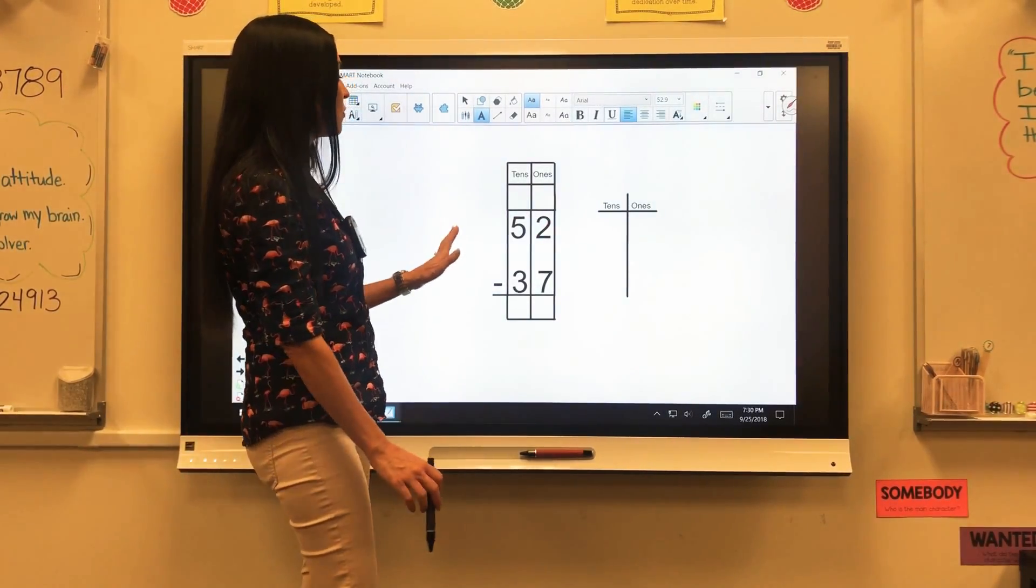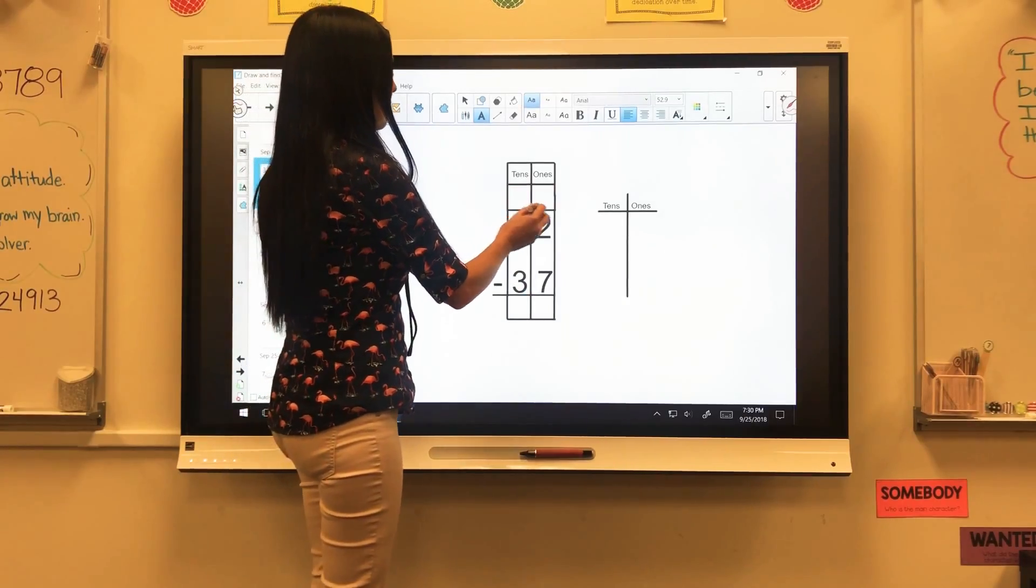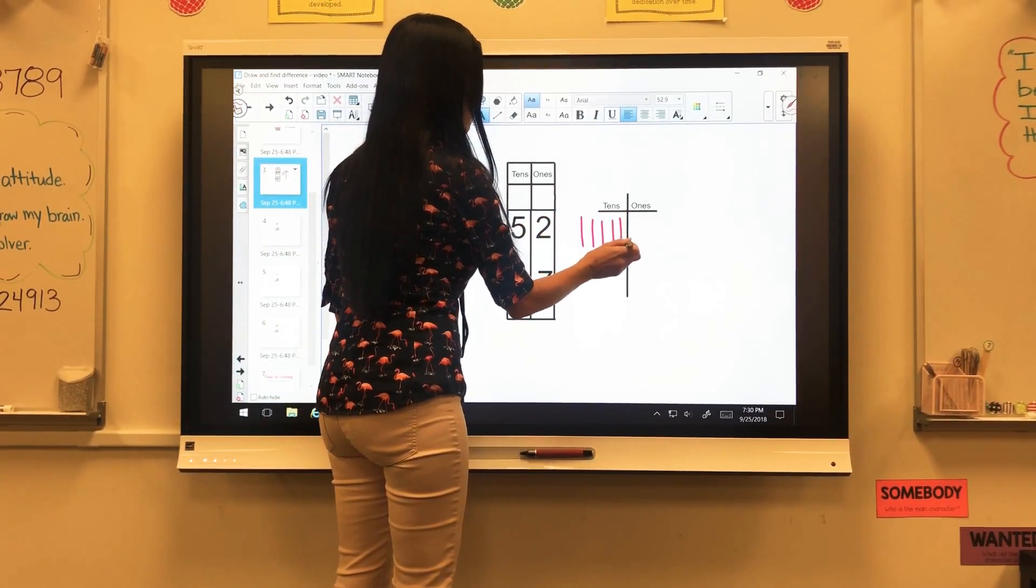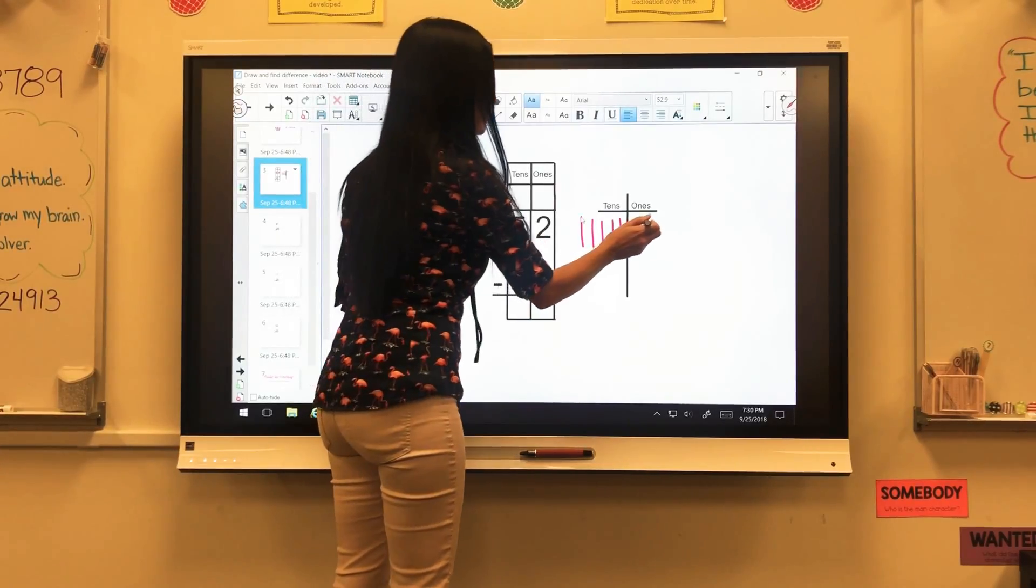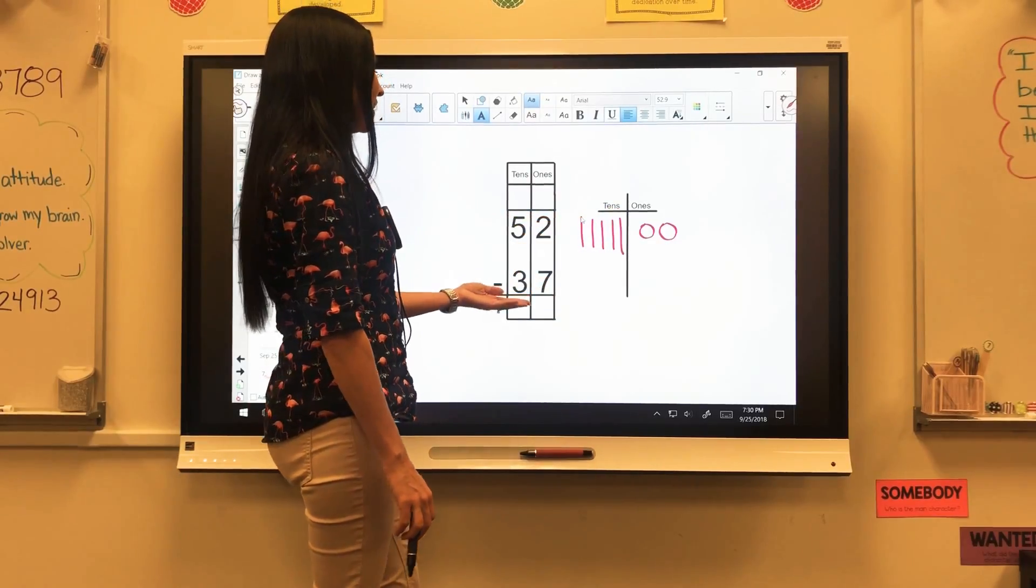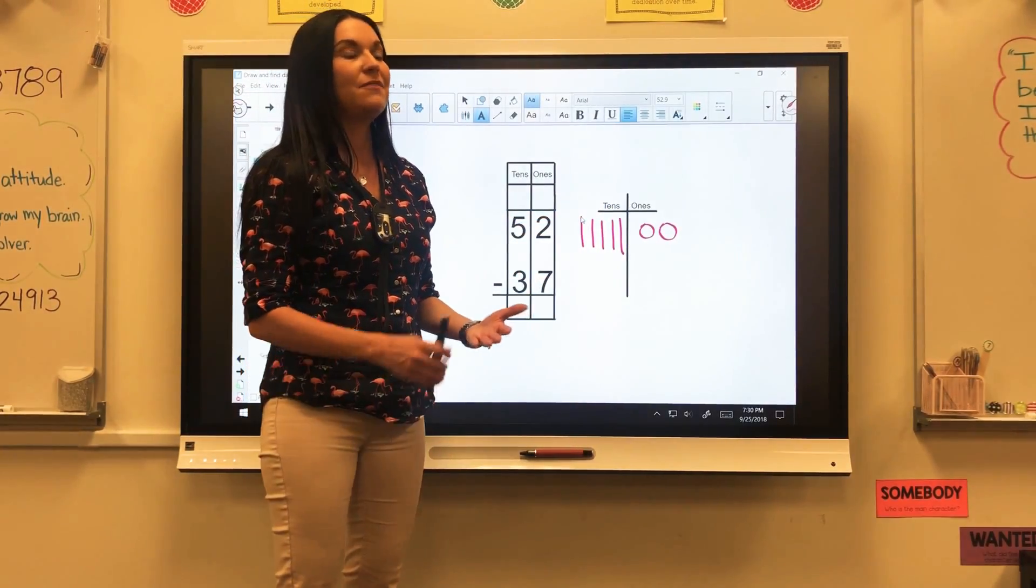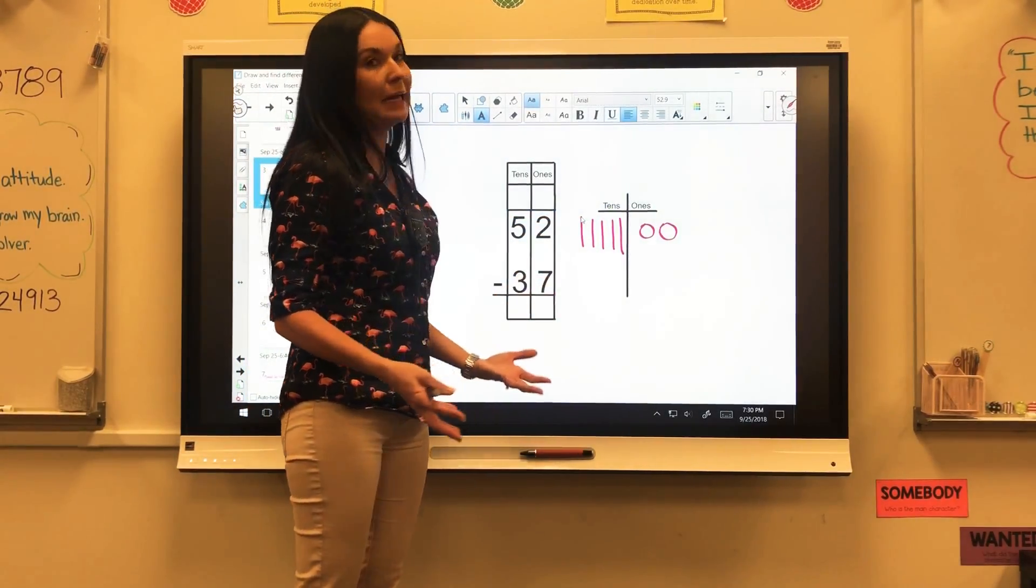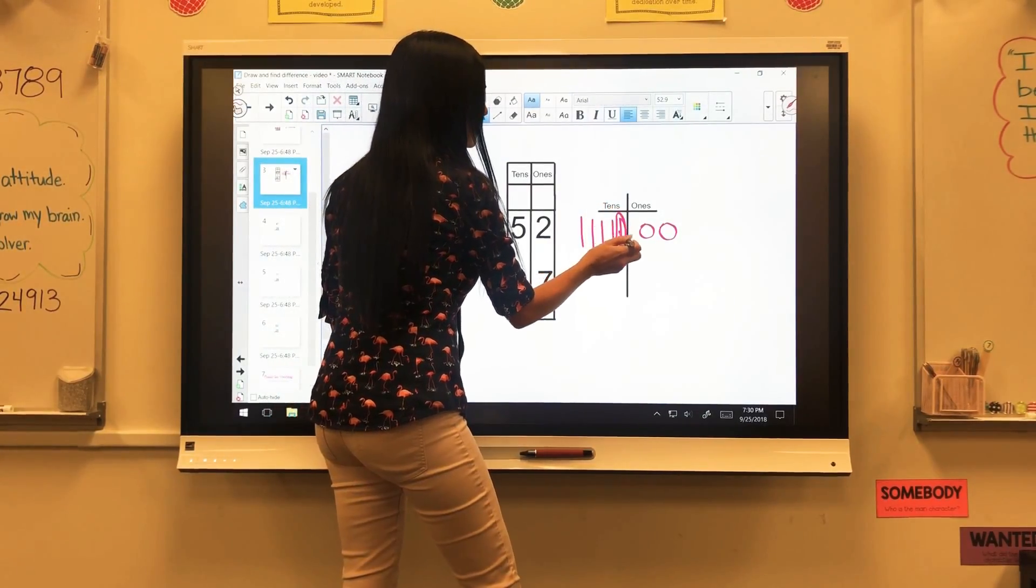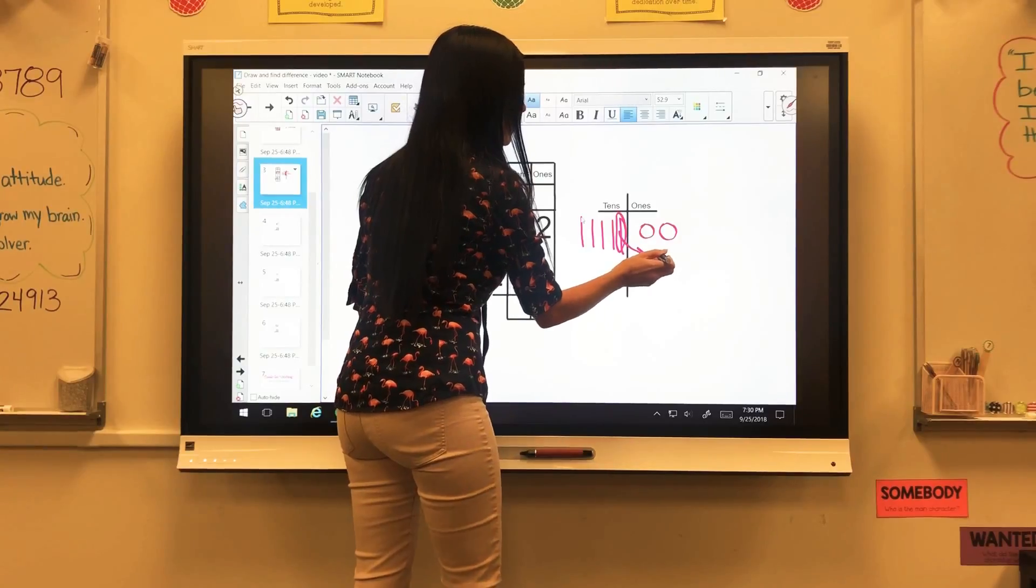Another one from 5.4, same thing. So I have 52. 1, 2, 3, 4, 5 tens and 2 ones. 1, 2. I'm going to look down here. If I only have 2 ones again, I need to take away 7. And if I have 2 of something, I can't take 7 away from it.